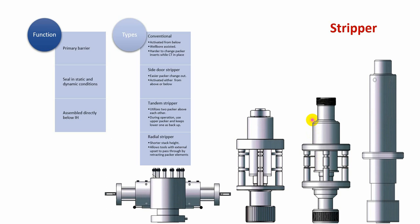The stripper has four types: conventional, side door stripper, tandem stripper, and radial stripper. The conventional stripper is not used much nowadays because it is difficult to change stripper elements with coiltube through the stripper. However, it has one advantage: it is wellbore-pressure assisted, meaning that if wellbore pressure increases, the sealing around the coiltube also increases.